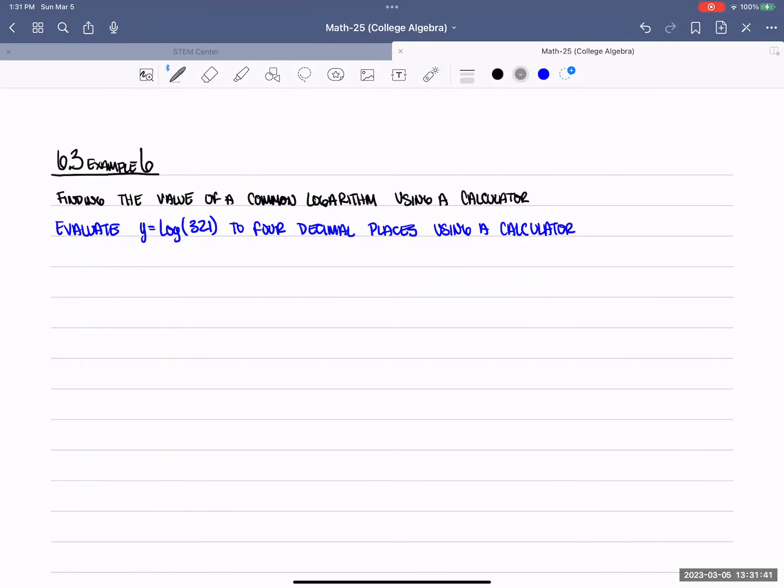Section 6.3, example 6: finding the value of a common logarithm using a calculator. Evaluate y equals log of 321 to four decimal places using a calculator.